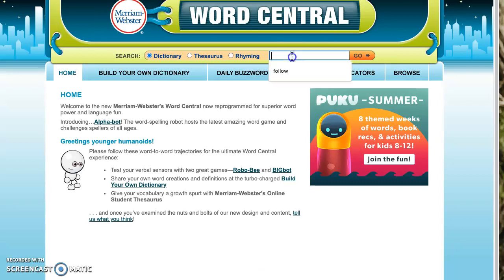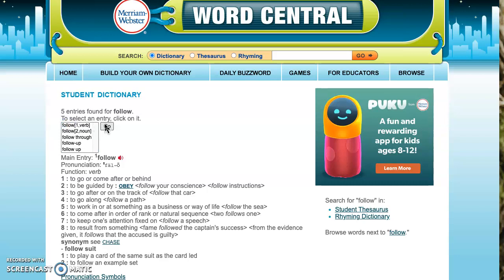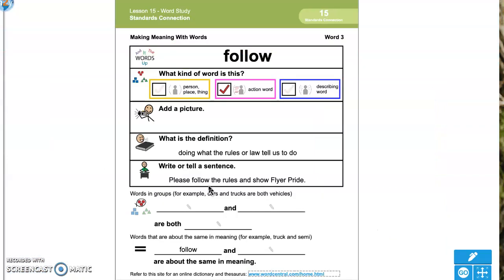It comes up with Word Central and we can write the word follow in here. Because we used follow as a verb, right? Another word it says is to come or to go after or behind, or to be guided. How about obey? Does that make sense, to follow or obey the rules? I think that means the same. So we're gonna say follow and obey. Obey is spelled O-B-E-Y. So follow and obey are about the same in meaning. Obey the laws, obey the rules, follow the laws, follow the rules, those are kind of the same.